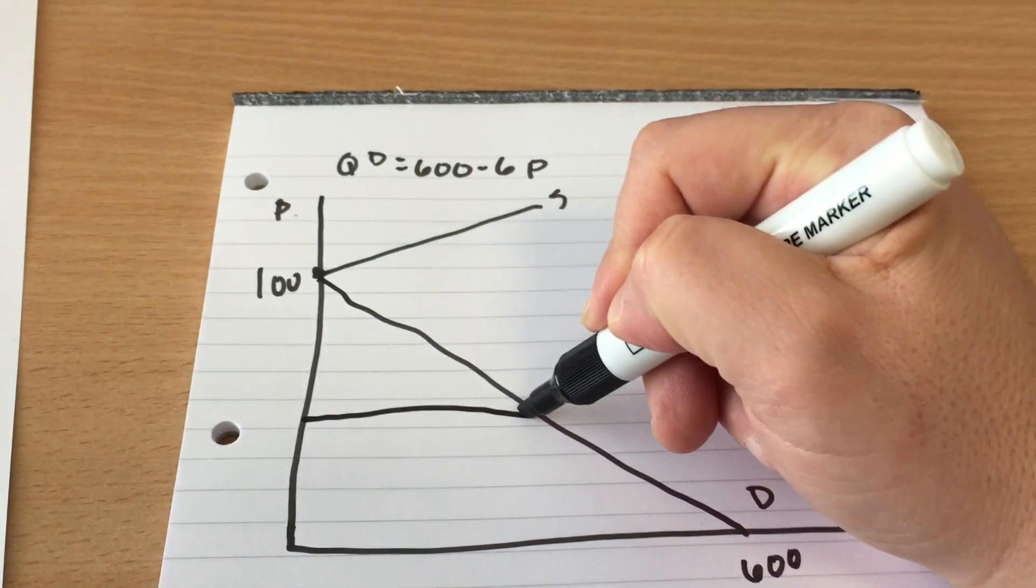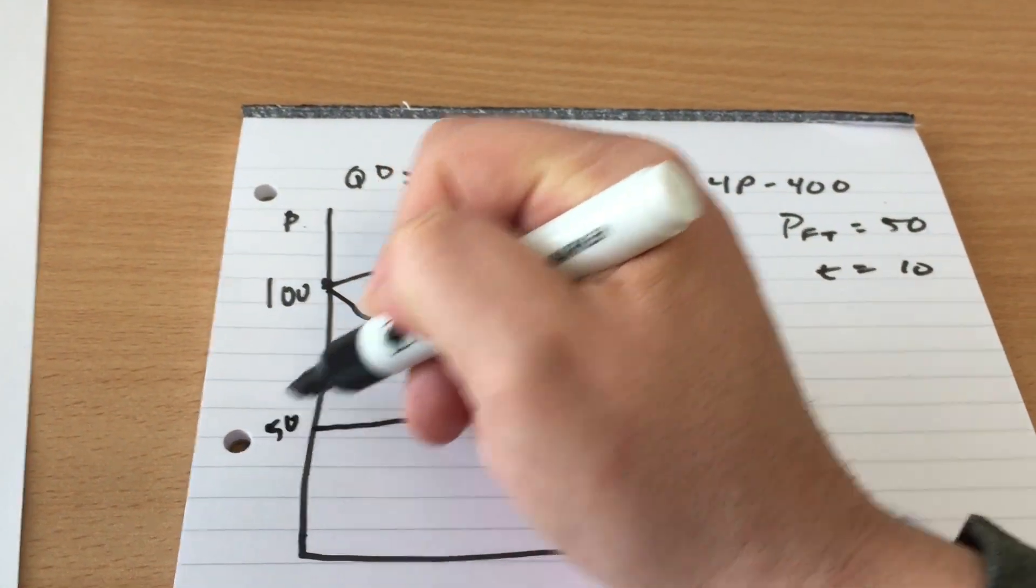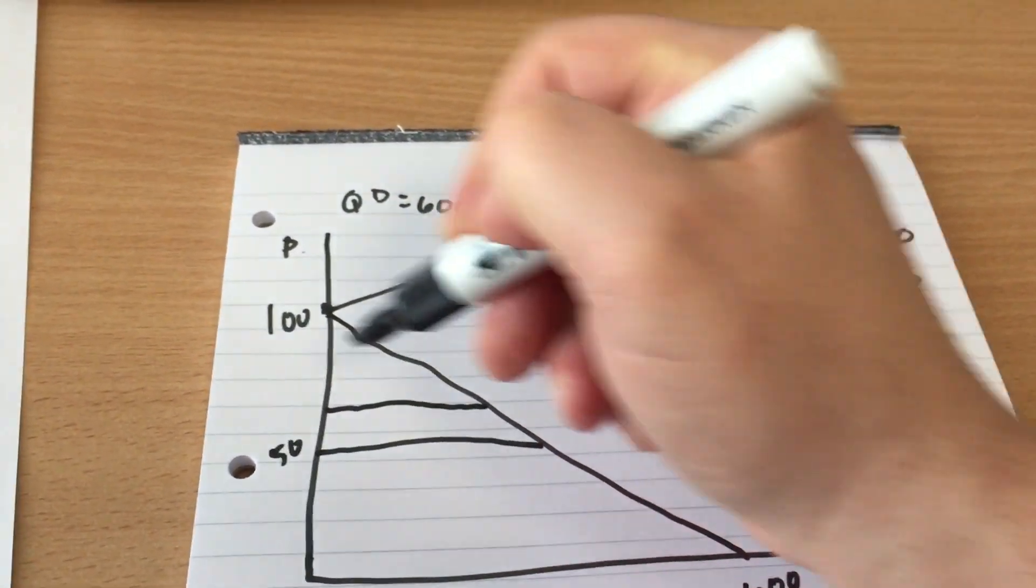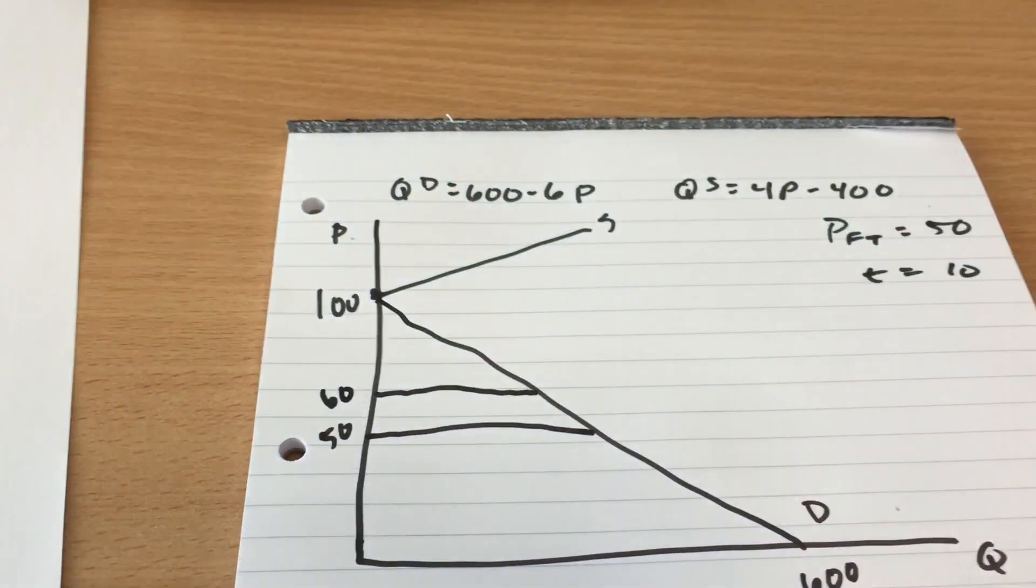So we start off at a terms of trade price of 50. We tack on the tariff that drives the price up in our country to 60.